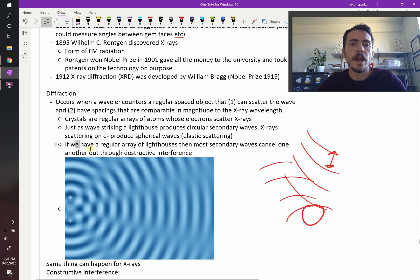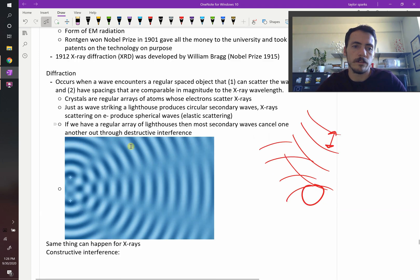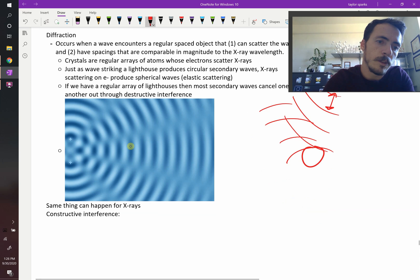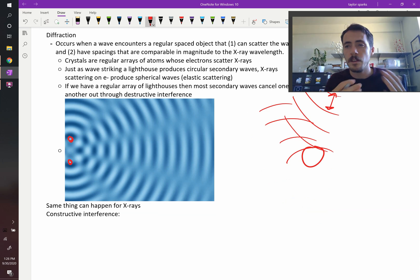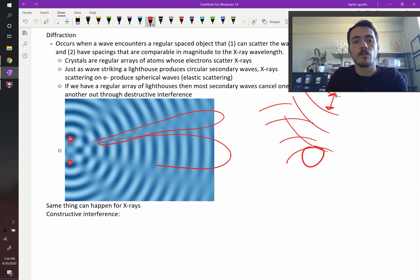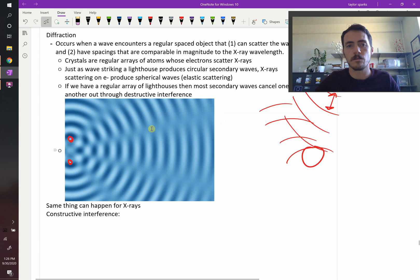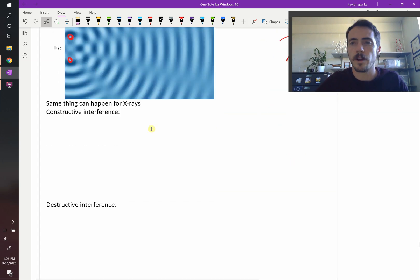How about this? If we had a regular array of lighthouses, then the most secondary waves would cancel out one. So for example, here we've got two lighthouses. If the waves coming in hit those, this is what you get. And you probably saw this in an introductory physics class. You get regions of destructive interference where the water would be calm, and you get regions of constructive interference where you'd get larger waves afterwards. So destructive and constructive interference caused these sort of patterns.